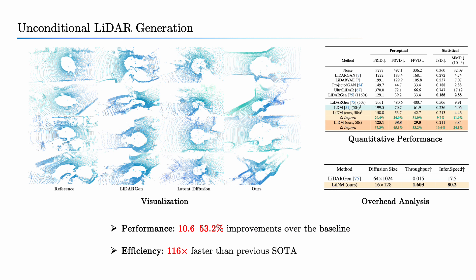For unconditional LiDAR generation, LiDAR diffusion significantly outperforms its baseline, LiDARgen. It also achieves competitive or even superior performance compared to all previous methods. Notably, LiDAR diffusion realizes a 160-fold speedup compared to LiDARgen.